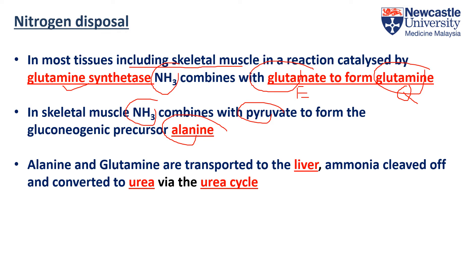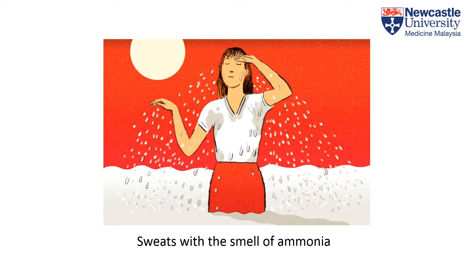Both glutamine and alanine are known as nitrogen transporters because they transport nitrogen to the liver, where the ammonia group is cleaved off. The ammonia is then converted into urea via the urea cycle.